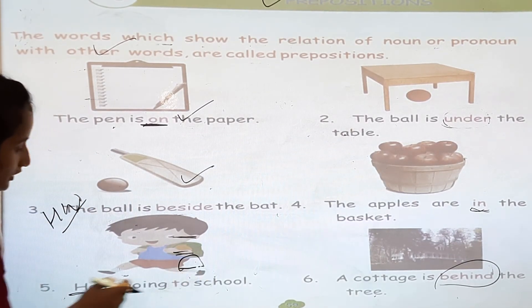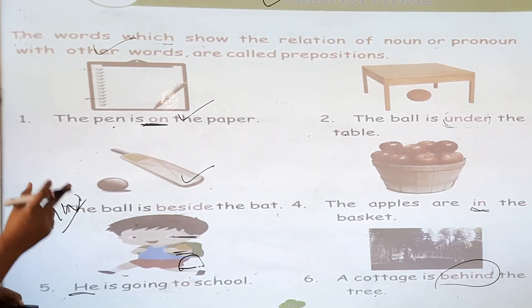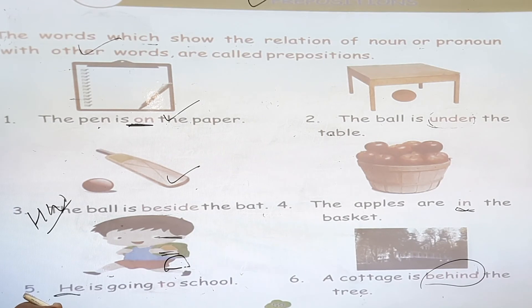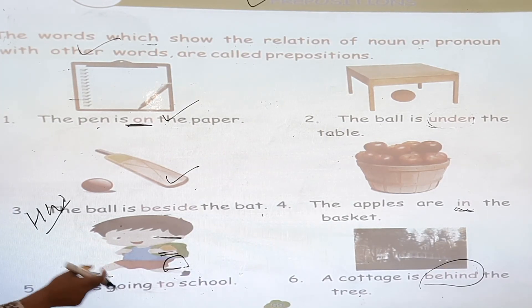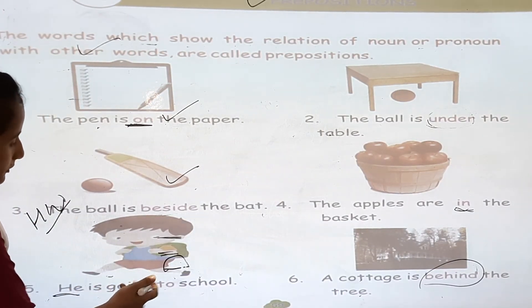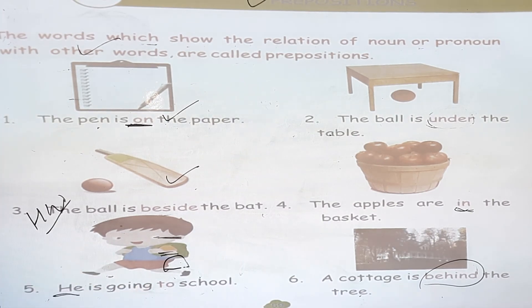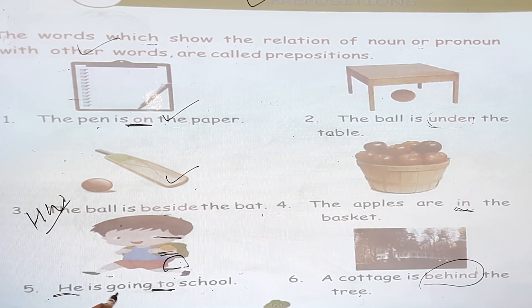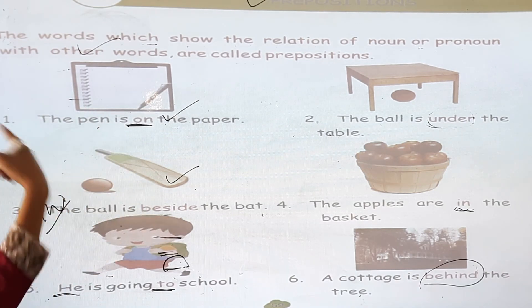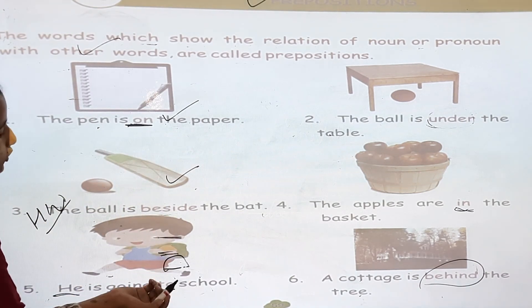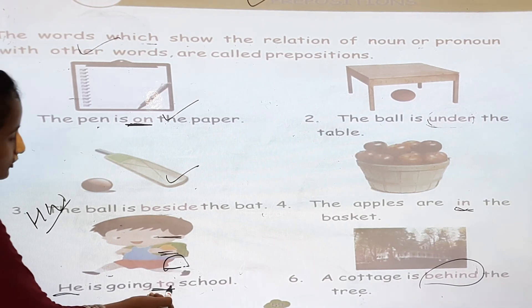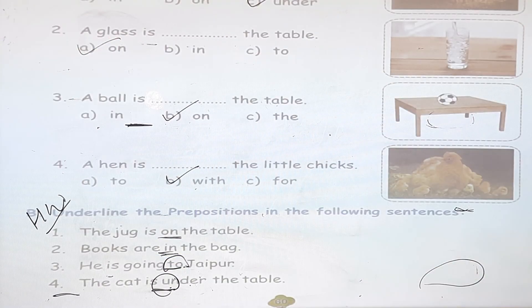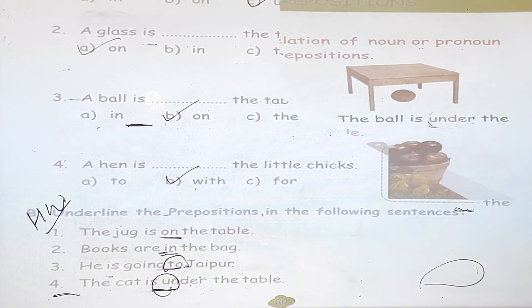For example, he is going to school. 'He' is a pronoun word. In the case of a pronoun used with a noun, the connecting word shows the preposition — it shows the relations. He is going to school — 'to' is a preposition word. You can write this in your book and copy. We have finished chapter 15.